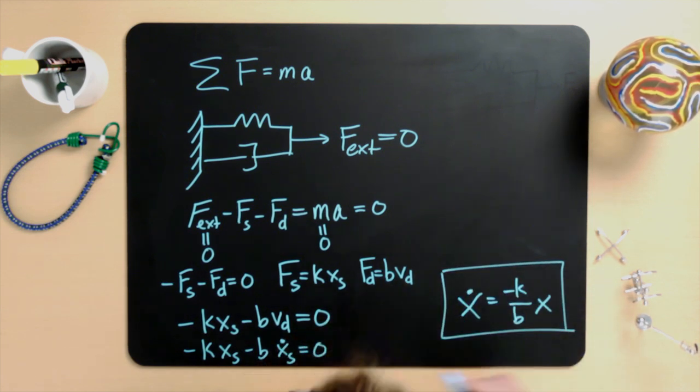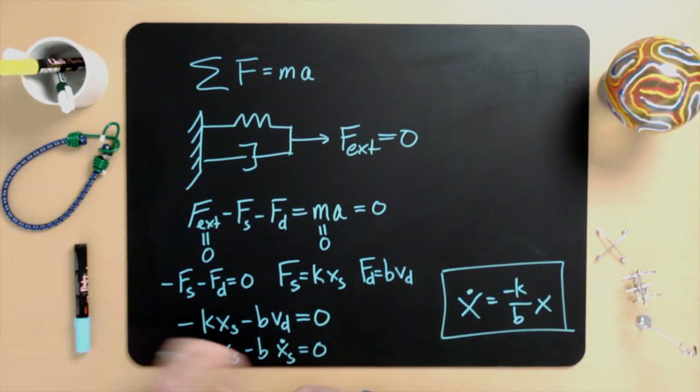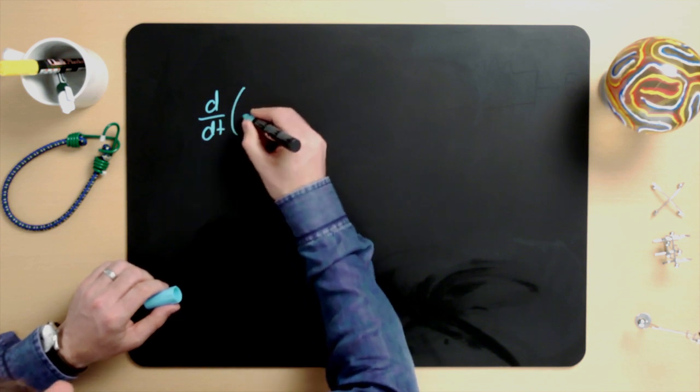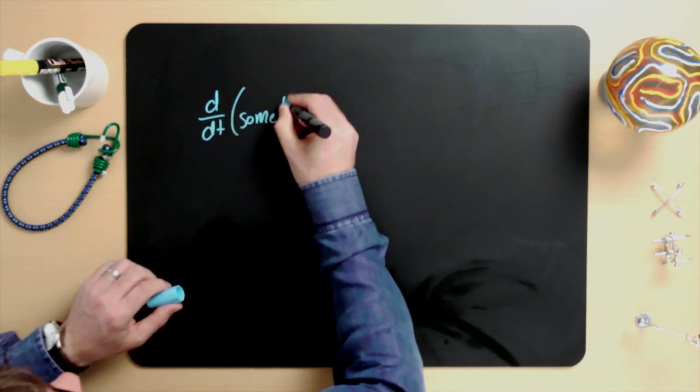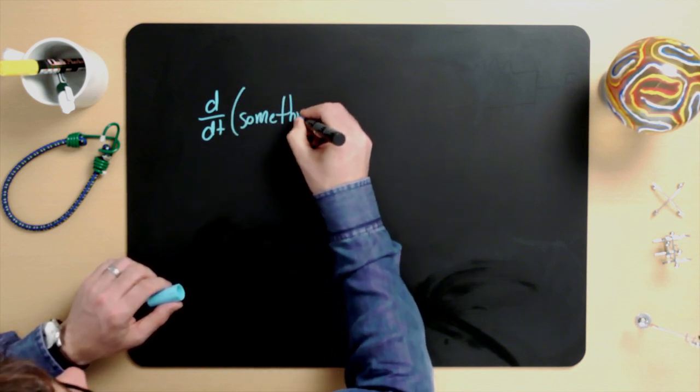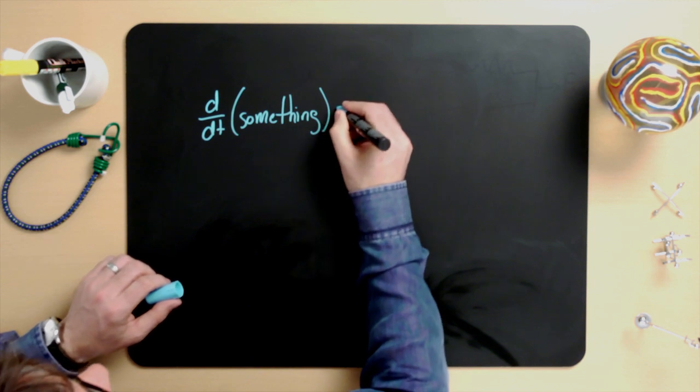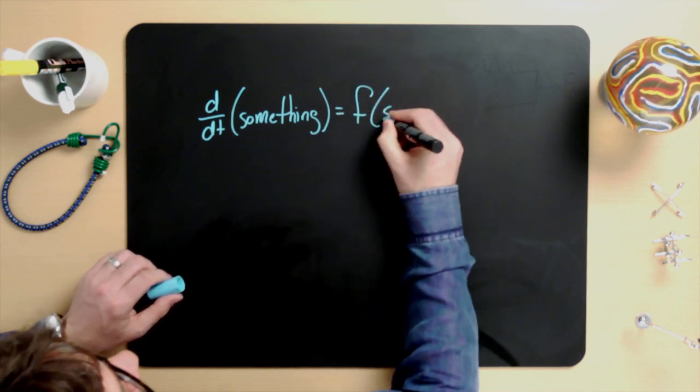This is called an ordinary differential equation, or ODE for short. This ODE says that the derivative of the position is equal to minus k divided by b times the position. Note that this means the derivative of the variable x is equal to a function of the variable x — this is the form of an ODE: d/dt of something is equal to a function of that something.